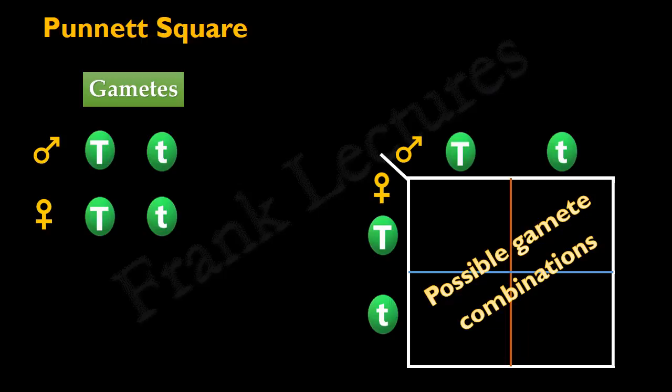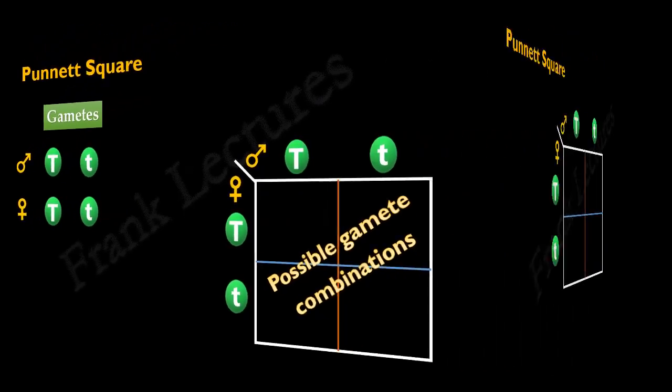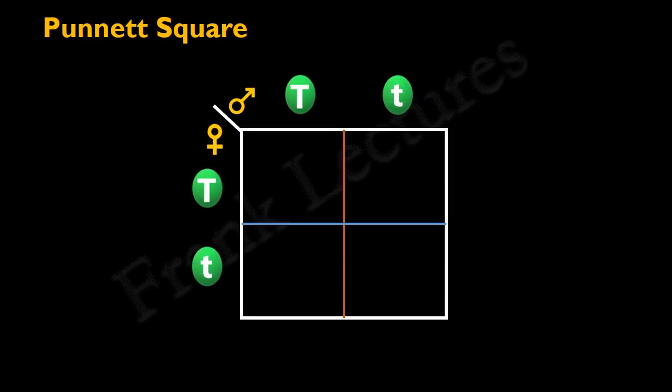Let's learn how to work out these possible gamete combinations. Just select one box inside the square, for example, upper left box. We have to write two alleles in this box, one from the male parent and one from the female parent. These two alleles are obtained by writing the allele at the top of the box and the allele at the leftmost side of the box. So, for this box, the combination of alleles will be two copies of dominant allele, that is, capital T and capital T.